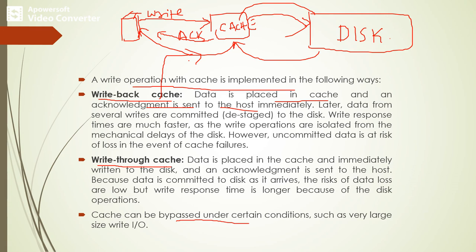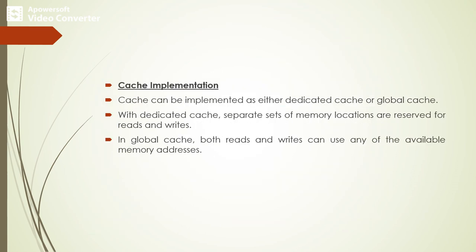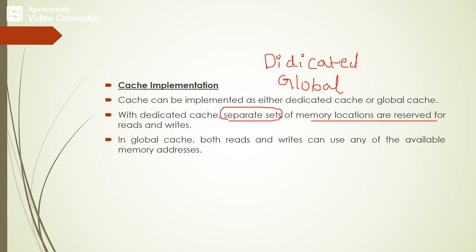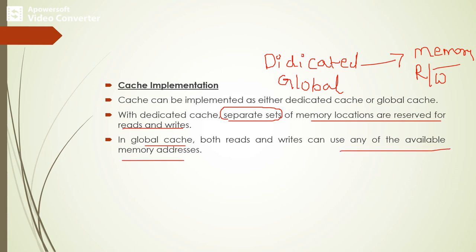Cache can be bypassed under certain conditions, such as very large size write IO. Cache can be implemented as dedicated cache or global cache. In the case of dedicated cache, we maintain separate sets of memory locations in order to perform read as well as write operations. In the case of global cache, whatever available memory addresses are present, those addresses can be used to perform read as well as write operations.